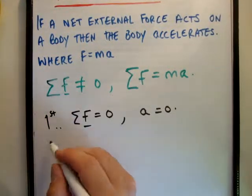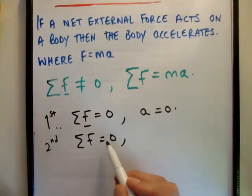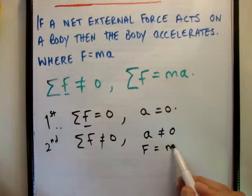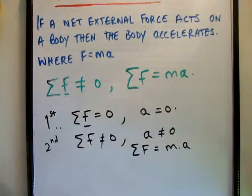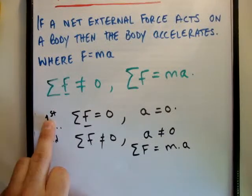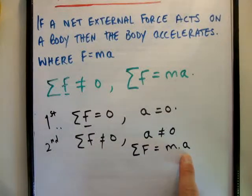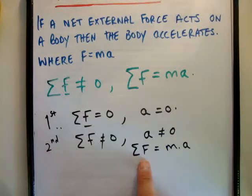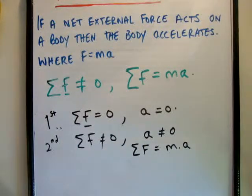And in the second law we're saying where the sum of the forces is non-zero, A is non-zero, and F is equal to Ma. So basically, you could say that the first law is a specific case of the second law. Because look, F equals M times A, or the overall sum of the forces is equal to Ma. Well what if the overall sum of the forces are equal to zero? Then A would be equal to zero, which is the statement of the first law.